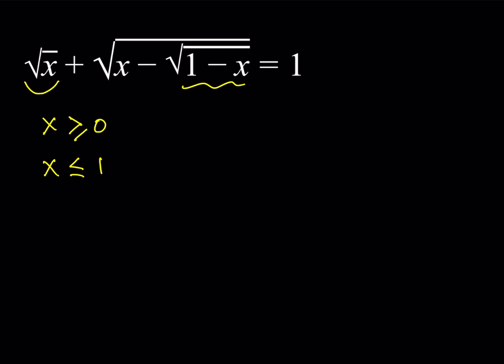How about the third one? If you check the third radical, it's going to give you something like this. We need that x minus the square root of 1 minus x is greater than or equal to 0. And this can be written in different ways, but let's write it like this: x is greater than or equal to 1 minus x.